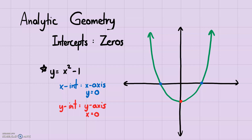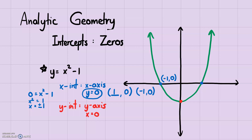Using the equation you can find the exact values of these intercepts. For more complicated graphs you'll need to use the equation to find them. For the x-intercept, set y = 0 and solve for x. Setting y = 0 gives 0 = x² - 1, so x² = 1, and x = ±√1 = ±1. This explains why there are two x-intercepts: (1, 0) and (-1, 0).